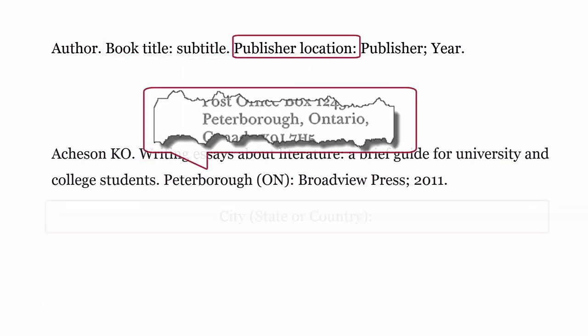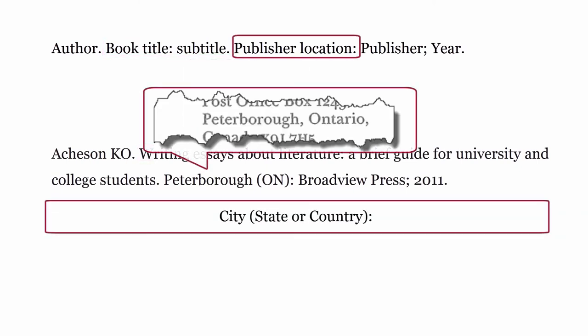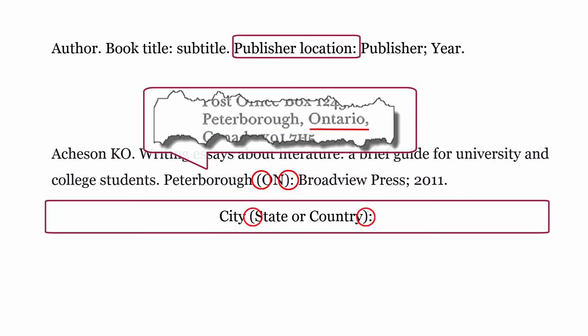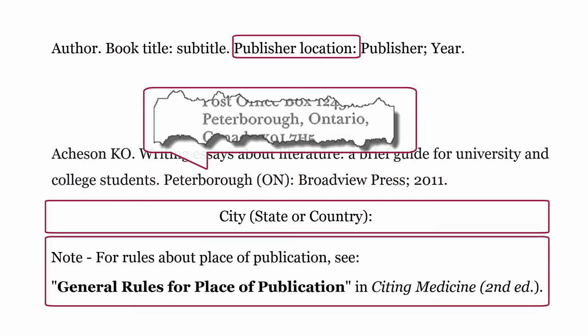Publisher location. Where the publisher is based. The publisher's location is formatted using the city, then the state or country enclosed within round brackets, then a colon. For rules about place of publication, see general rules for place of publication in Citing Medicine, second edition.